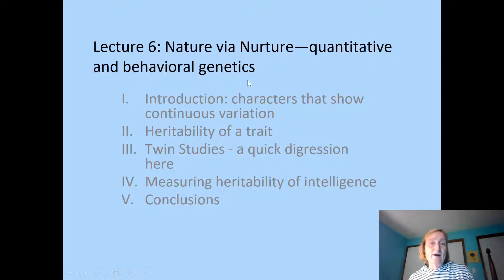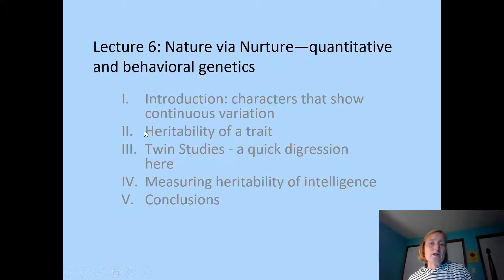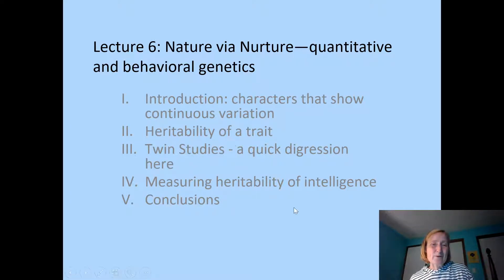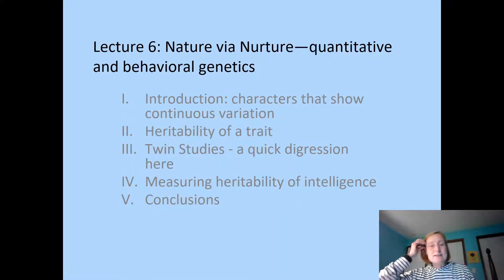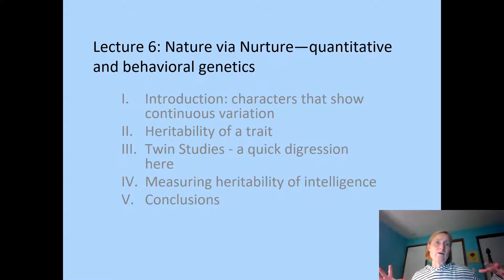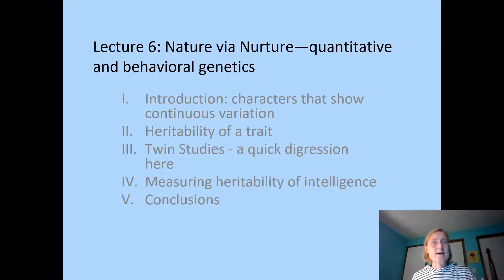We're going to take a look at traits or characters that show continuous variation — these are typically polygenic traits. We're going to talk about heritability of that trait. We'll briefly dive into twin studies and why they're interesting. And then we'll go through an example of the trait of intelligence and how we can think about the role of genetics and environment on these more complex traits like intelligence or personality.